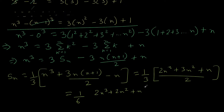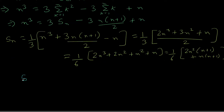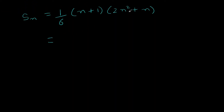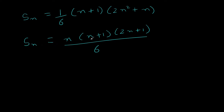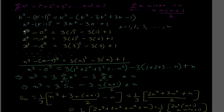Simplifying further: 2n³ + 3n² + n divided by 6. Taking n common gives n(2n² + 3n + 1)/6. Then factoring 2n² + 3n + 1 as (n+1)(2n+1), we get Sn = n(n+1)(2n+1)/6. So the final expression for the sum of squares of first n natural numbers is n(n+1)(2n+1) divided by 6.